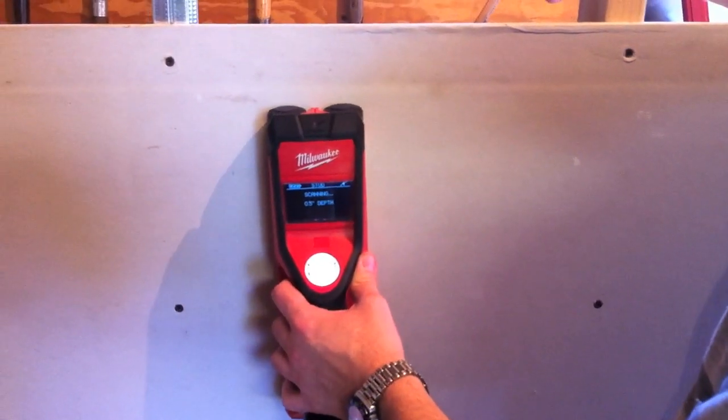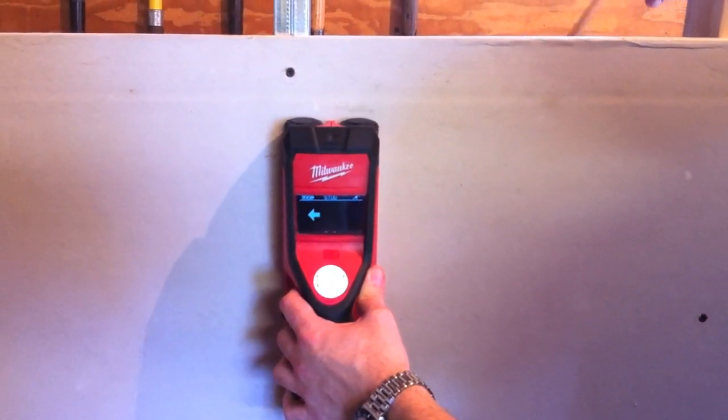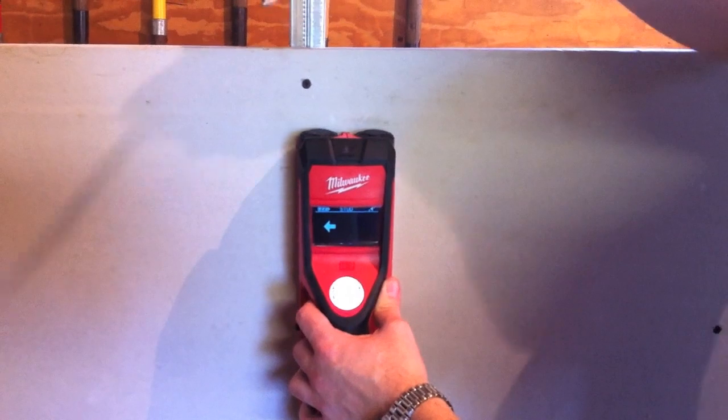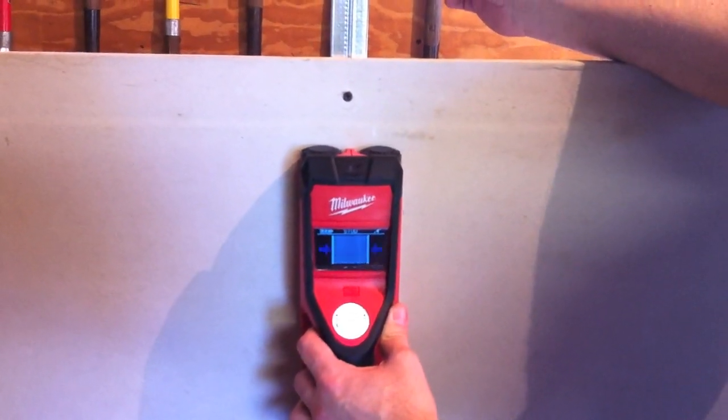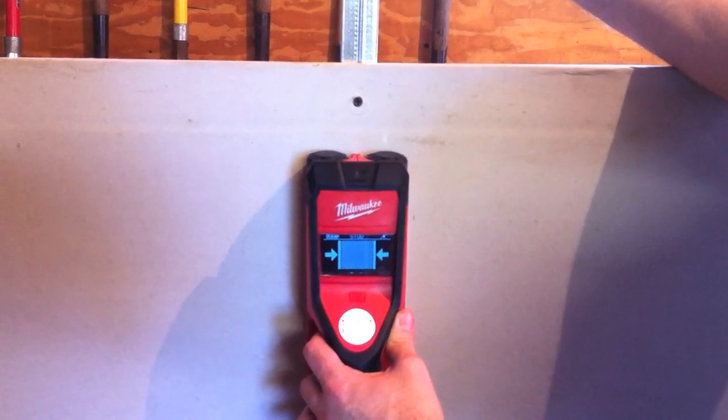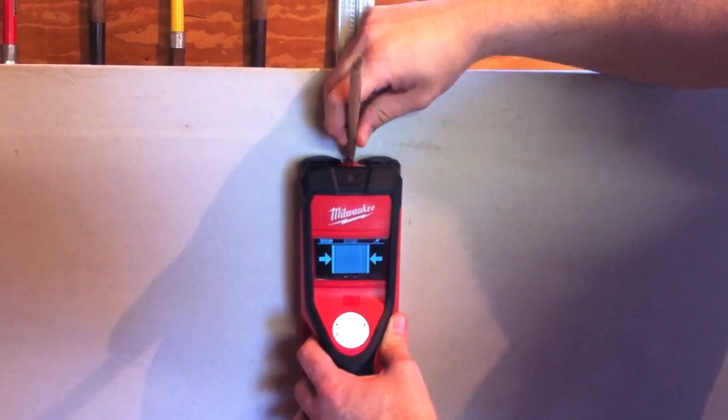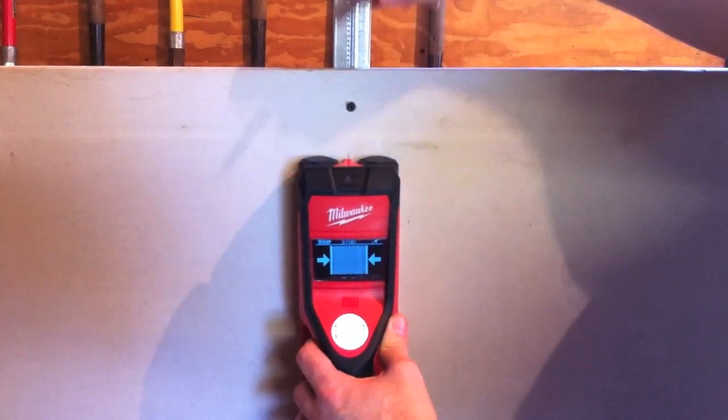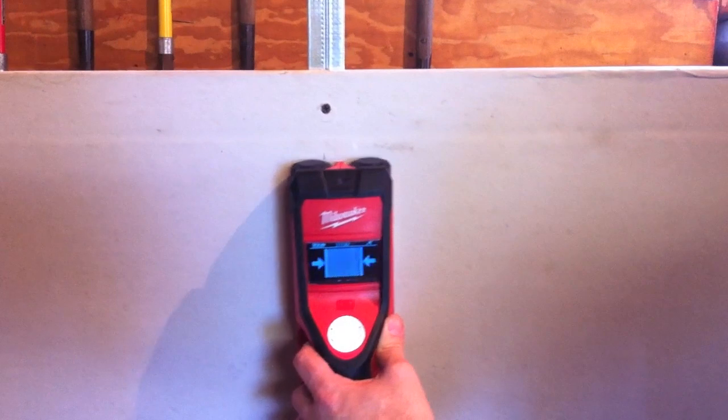So we're slowly going to slide across the wall, and obviously we see an arrow there, so it's telling us that there is a stud in this area. If we keep going, there's the stud right there. That is the exact center of the stud. If you look up top here, there's this little mark, so we can mark the center of the stud. So obviously that coordinates right with the metal stud. Real good job there.